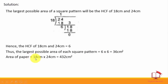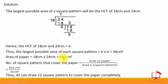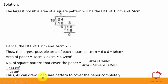Area of the paper = 18 × 24 = 432 square centimeters. Number of square patterns = area of paper ÷ area of square pattern = 432 ÷ 36 = 12. Thus Ali can draw 12 square patterns to cover the paper completely.